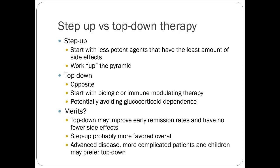The top-down approach gets you into remission faster with fewer side effects and less trial and error. The problem is it's really expensive — biologics' biggest barrier is cost. Insurance may require that a patient try a 5-ASA drug or cheaper older therapies before approving a biologic like Humira.